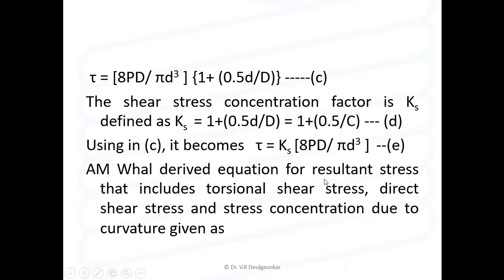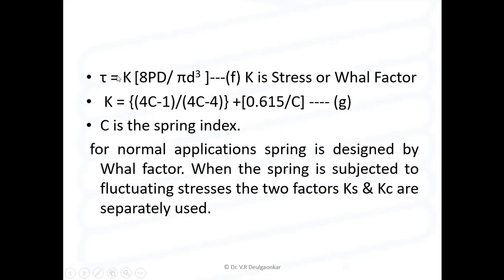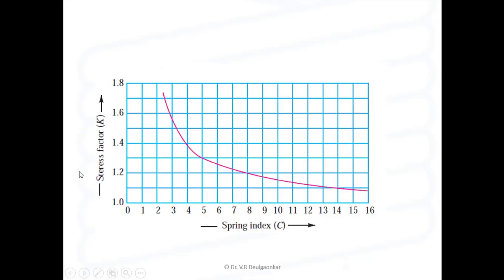Wahl designed an equation for the resultant stress that includes torsional shear stress, direct shear stress, and stress concentration due to curvature, given as tau = K into 8PD upon pi d cubed, where K is the Wahl factor: K = (4C minus 1) upon (4C minus 4) plus 0.615 by C, and C is the spring index. For normal applications, the spring is designed using the Wahl factor, but when the spring is subjected to fluctuating stresses, we need to separate out the two factors Ks and Kc and use them individually. The stress factor increases with the decrease in spring index.